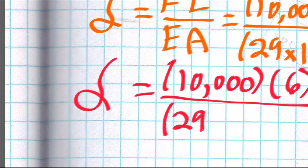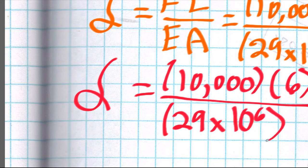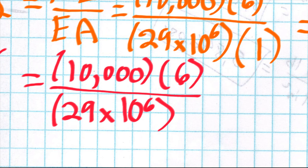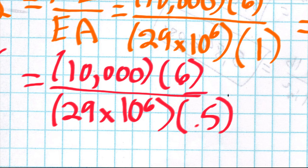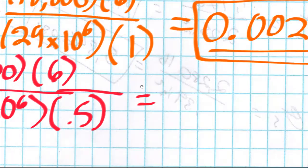The material is gonna be the same, which we need to pay attention to that when we start using different materials. 29 times 10 to the six, and then also our area which is 0.5 inches squared.